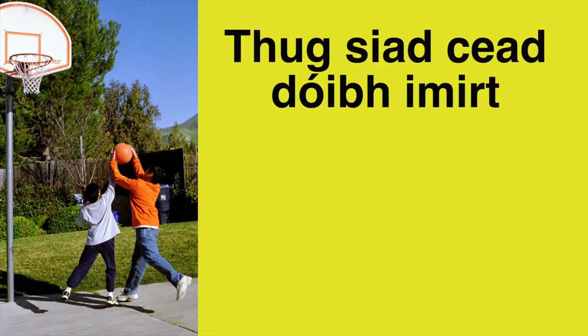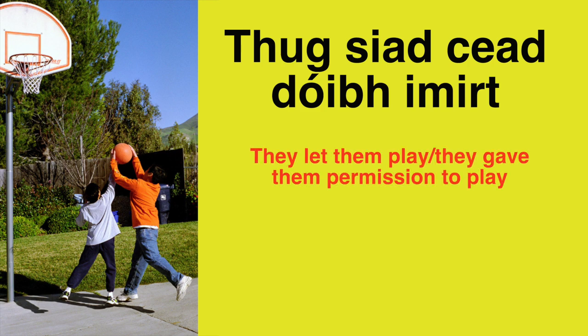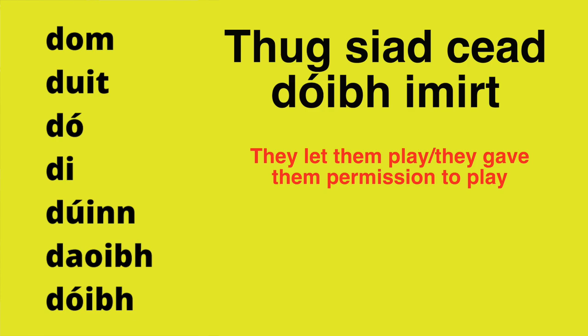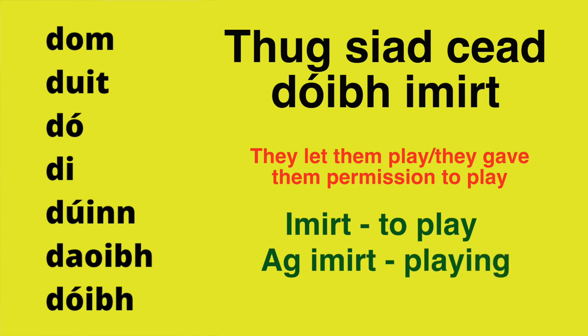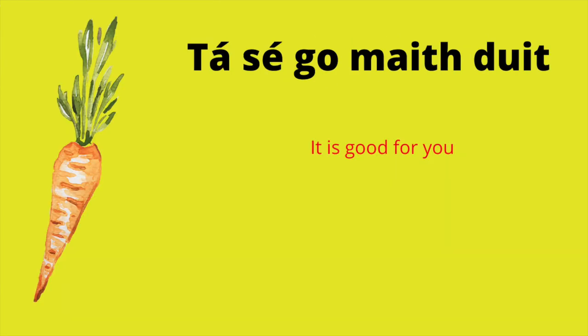'Thug siad cead dóibh imirt.' They gave them permission to play. 'Thug siad' means 'they gave'. 'Cead dóibh' means 'permission to them' or 'permission for them' — remember 'do' can mean 'to' or 'for', so there's flexibility. 'Imirt' is 'to play' — 'ag imirt' is 'playing', and by dropping the 'ag', it becomes 'to play' instead of 'playing'.